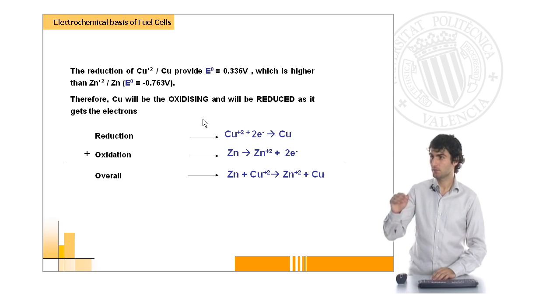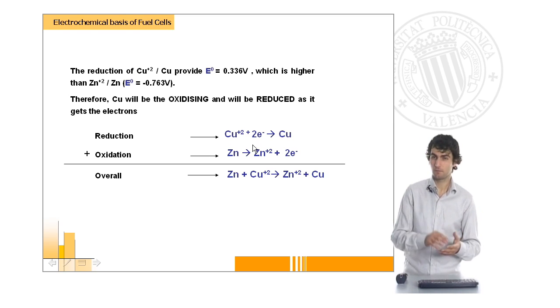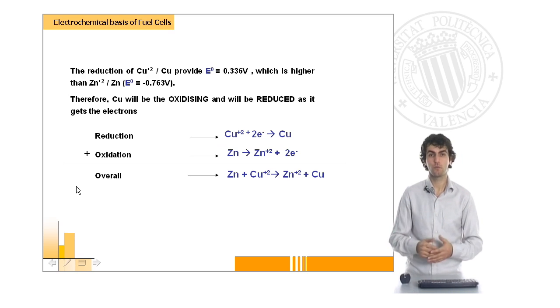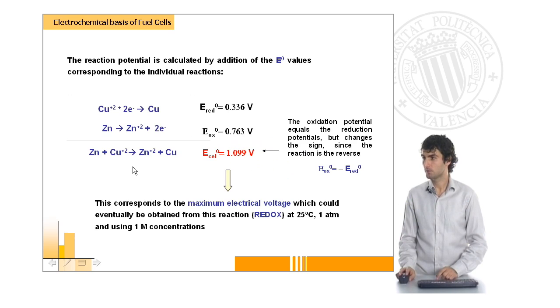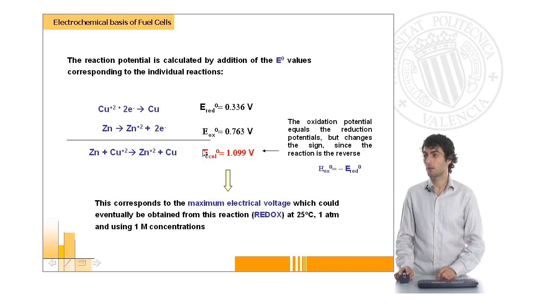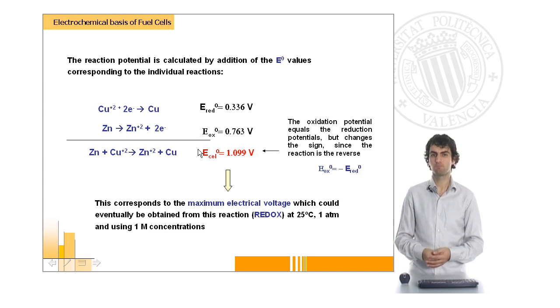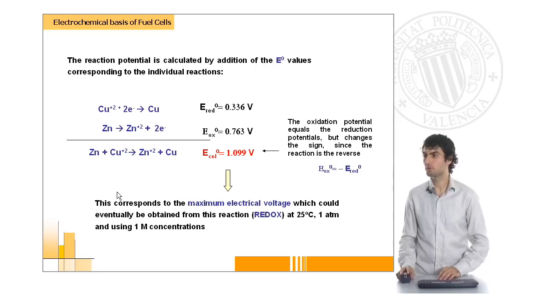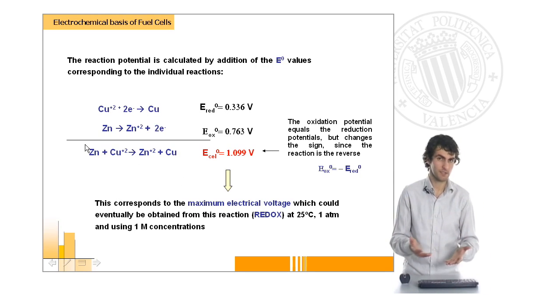If we put two reactions together, in this case the reduction reaction involving copper ion and the oxidation reaction involving zinc, we have the overall reaction which is the sum of the two. To calculate the potential of the overall reaction, we sum the two potentials, considering that we've changed this reduction reaction into an oxidation and therefore the sign has also changed. This corresponds to the maximum voltage we can have if we put these two species together to form a fuel cell or battery.